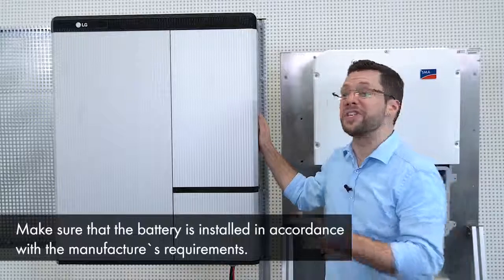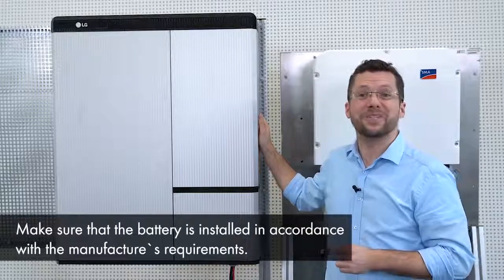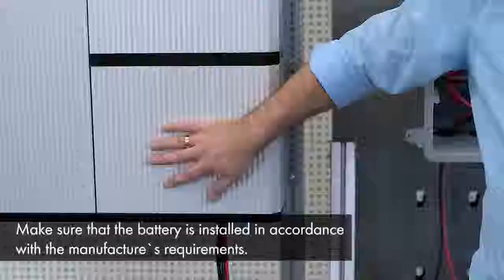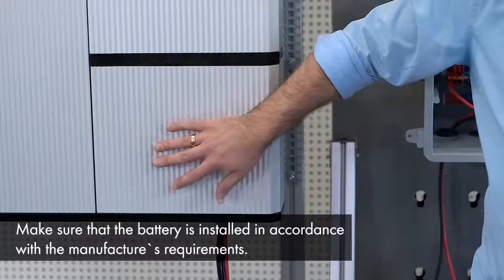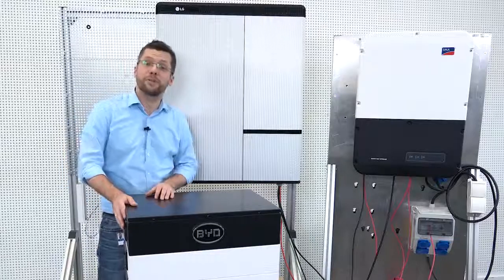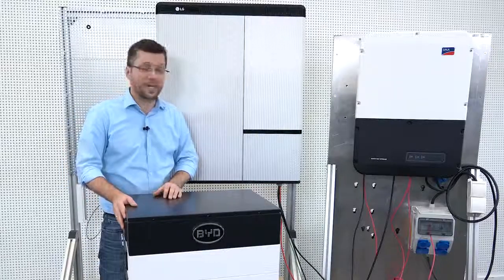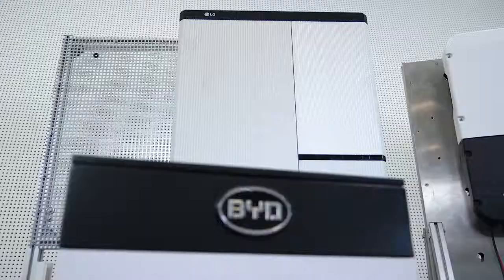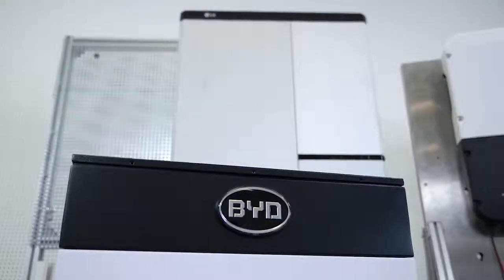For our today's example, we choose the LG Chem Resu 10H battery. Here you can see the already pre-wired unit. Of course, the LG battery is not the only high voltage battery that our Sunny Boy Storage Inverter is compatible with. Another alternative would be the BYD B-BOX high voltage.